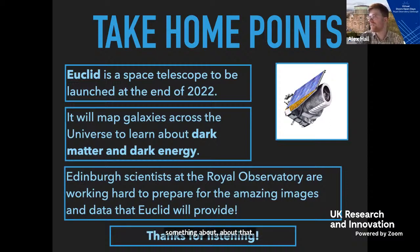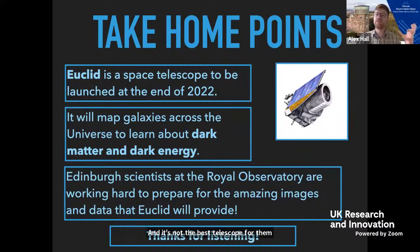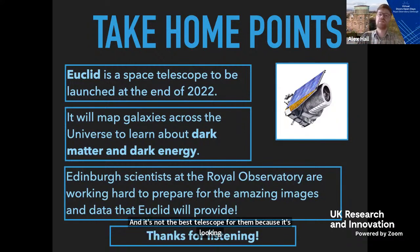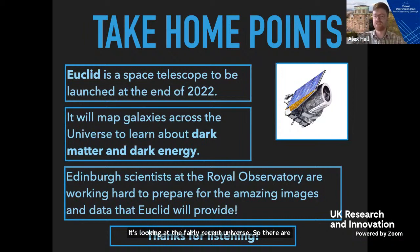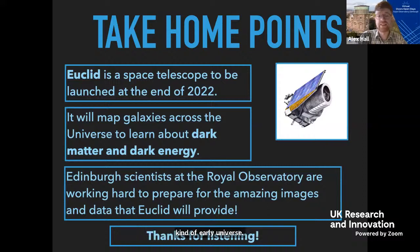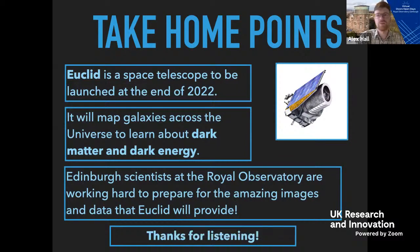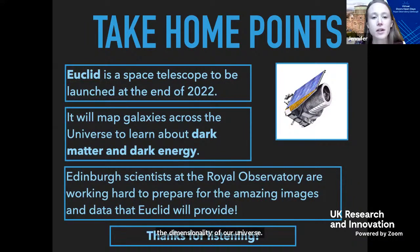In terms of other universes, Euclid is not the best telescope for that because it's looking at the fairly recent universe. There are other kinds of telescopes that observe the distant early universe — for example, the Planck satellite, which is another European Space Agency mission, can tell us a lot about the presence of other universes. But Euclid will tell us some very interesting things about the dimensionality of our universe. Next question: will the data from the Euclid mission be available to amateur astronomers?